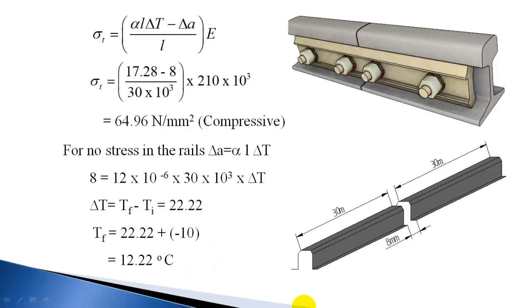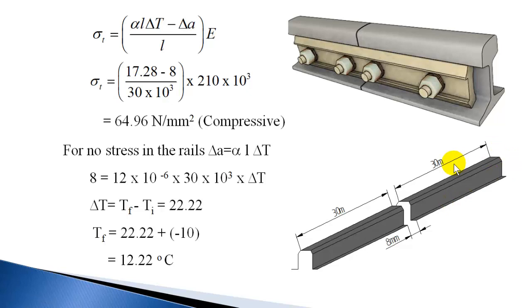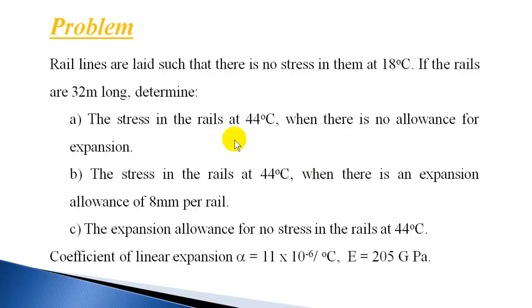When the temperature reaches 12.22 degrees centigrade, the free thermal expansion of the rails equals 8 mm and the gaps are just filled. If heated further beyond 12.22 degrees centigrade, there is no gap remaining and stress will be induced in the rails.